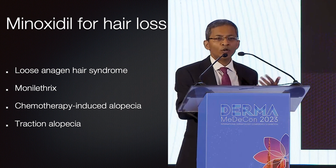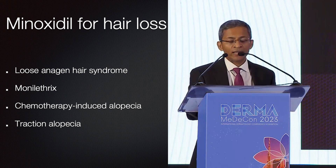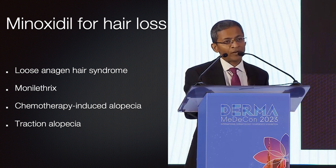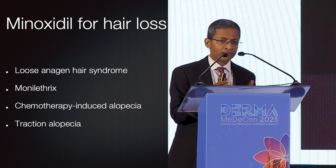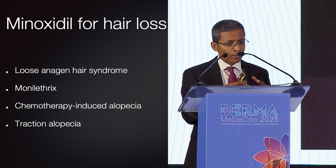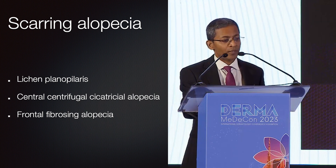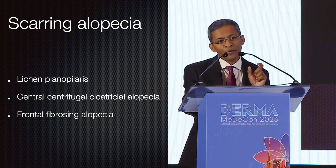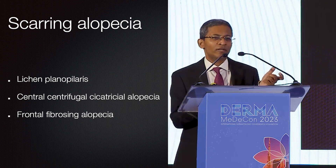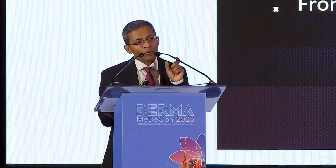Oral minoxidil can be used for quite a lot of other non-scarring alopecias: loose anagen hair syndrome, monilethrix, chemotherapy-induced alopecia, and traction alopecia. We don't have to restrict ourselves to specific conditions — that's the beauty of oral minoxidil. Interestingly, it can work for scarring alopecia as well, including lichen planopilaris, central centrifugal cicatricial alopecia, and even frontal fibrosing alopecia. In these conditions, it may have an immunomodulatory action, but more practically it thickens existing hairs, which masks the area of scarring alopecia.